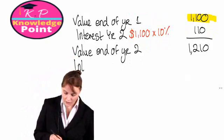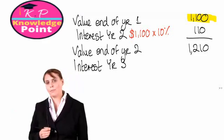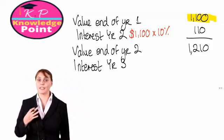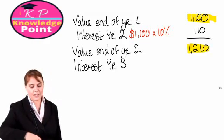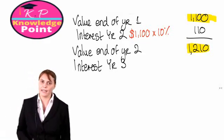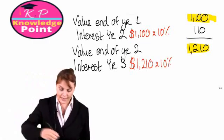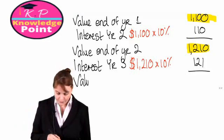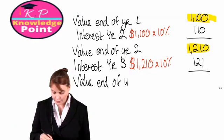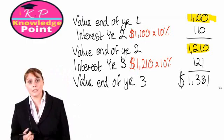Our next step is to add on the interest for year three. Remember, this is compound interest, so we calculate the interest based on the original investment plus the interest earned to date. The interest for year three is ten percent of the value at the end of year two: one thousand two hundred and ten multiplied by ten percent gives us one hundred and twenty-one dollars. So the value at the end of year three will be one thousand three hundred and thirty-one dollars. And that's the question complete.